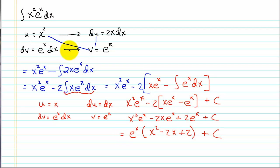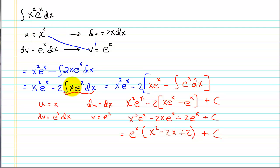In this example we followed the same procedure as example 1, but had to apply integration by parts repeatedly. In each step our integrand gets simpler: we go from x with a power of 2 in the original problem, to x with a power of 1, to no x — and we get to a point where we can integrate.